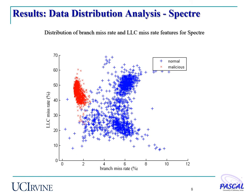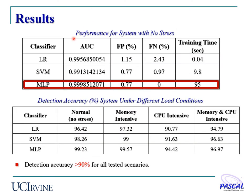We plot the data distribution of the branch miss rate and last-level cache miss rate for malicious and normal data. The two groups of data have a clear boundary between them, making classification possible. The first table shows detector performance for a system with no stress. As classifier complexity increases, we achieve reduced false positive and false negative rates, though training time increases. We further stress the detector with memory-intensive, CPU-intensive, and combined workloads, yet were able to achieve detection accuracy above 90% for all tested scenarios.